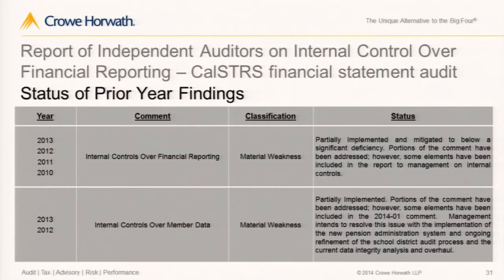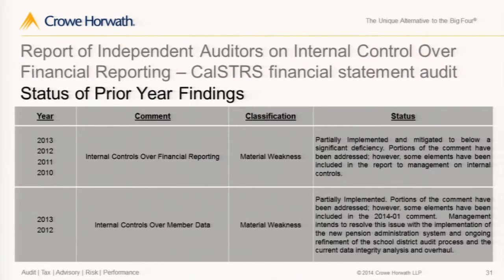To correlate with previous years: the prior material weakness on internal controls over financial reporting was a combination of deficiencies that when aggregated rose to the level of material weakness. Many of those deficiencies have been remediated and were no longer found during audit procedures. Those deficiencies no longer appear in the letter to the committee. Progress should be acknowledged and the remediation of this multi-year material weakness comment should be celebrated.